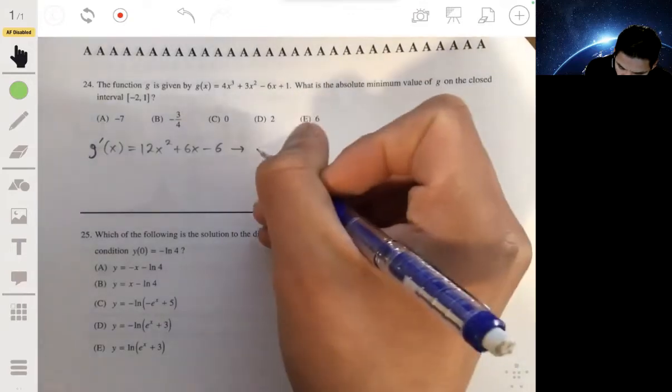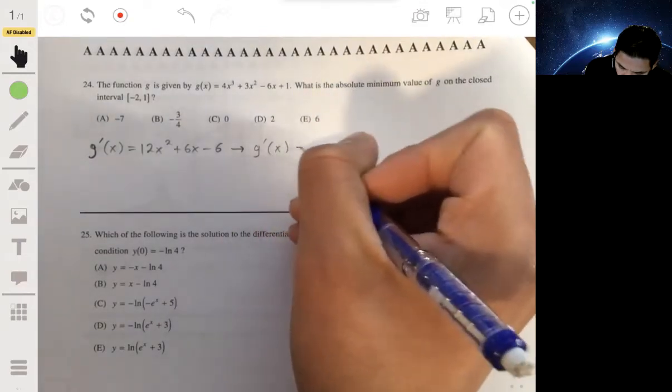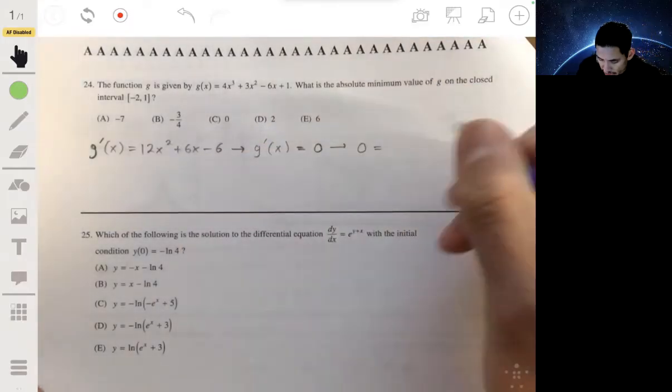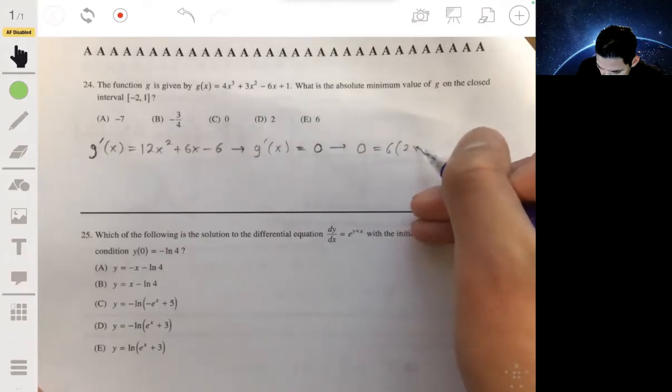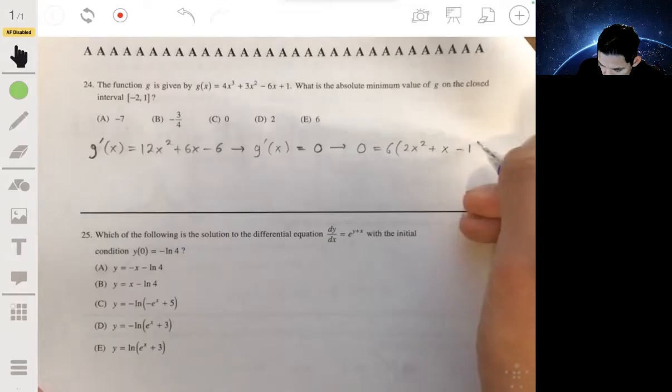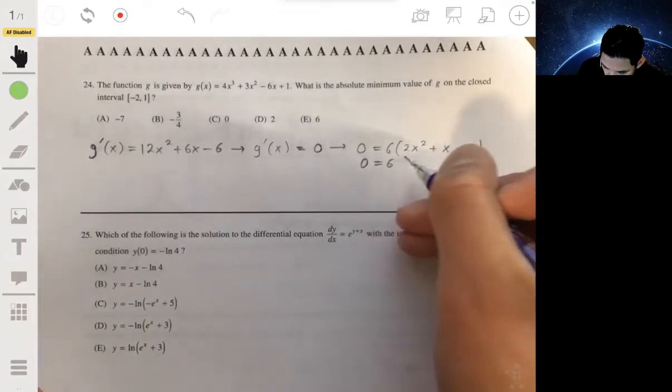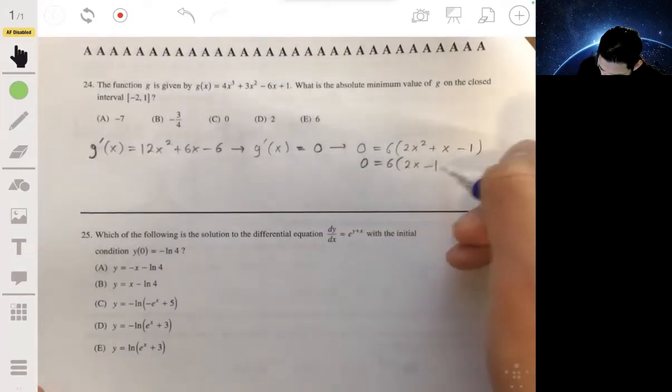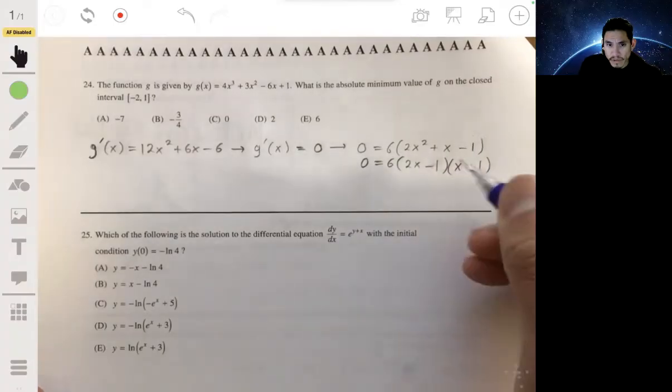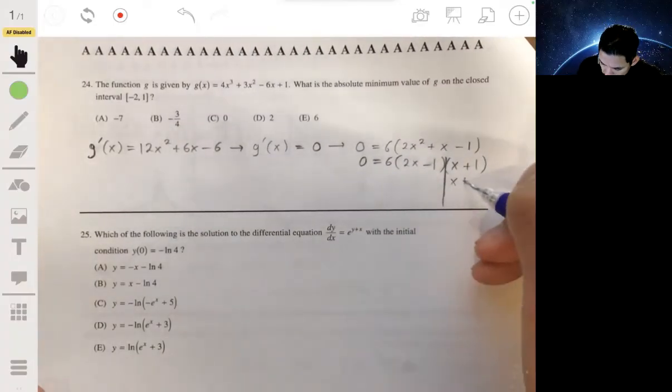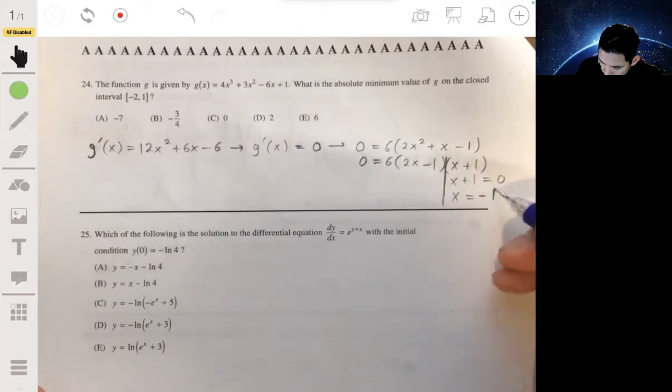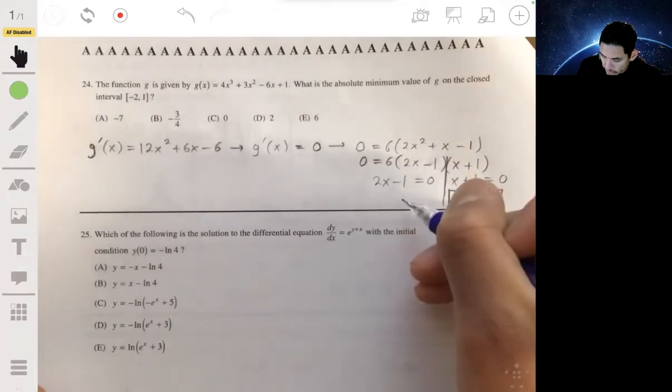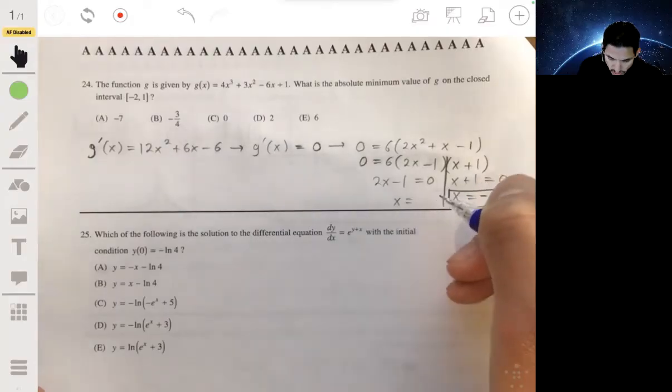Let's take the derivative. g prime of x will be 12x squared plus 6x minus 6. Find where this could be zero or undefined. It's not going to be undefined anywhere, so we need to find where the zeros are. We're going to set zero equal to that and factor out a 6, so we'll get 6 times 2x squared plus x minus 1, which factors to 6 times (2x minus 1)(x plus 1). So our critical values are at x equals negative 1 and x equals one half.